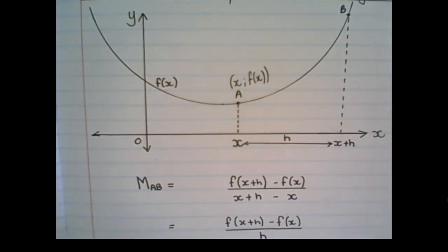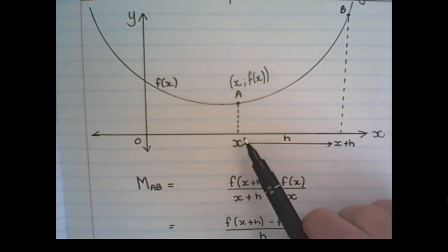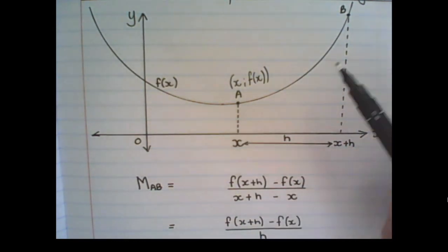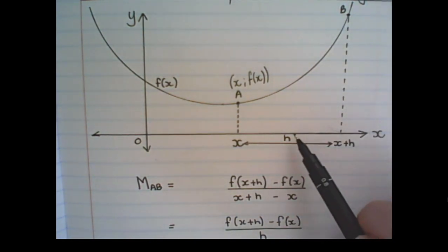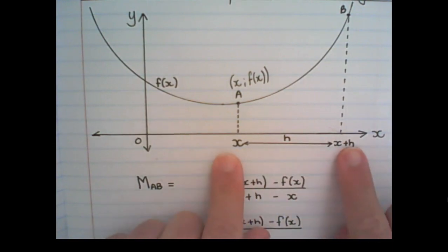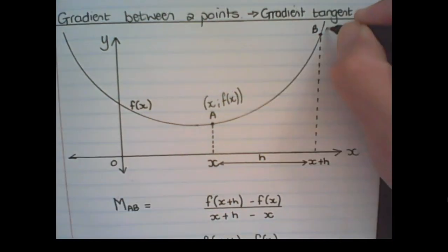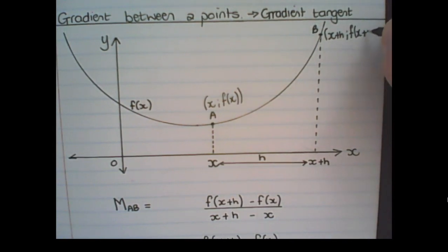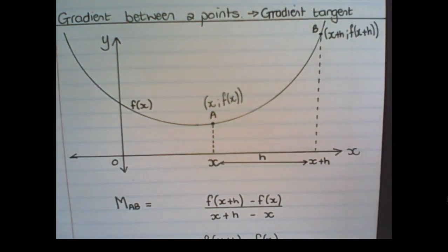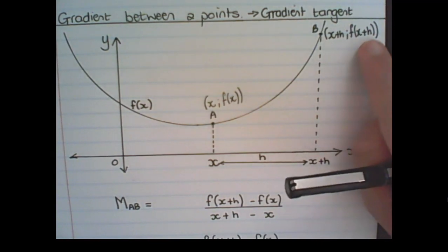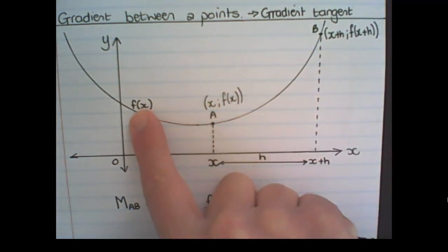Now we're not working with numbers today, we're just working with variables. So the distance between the x value of a and the x value of b is h. So it's h units between these two points. Therefore, the x coordinate of b is x plus h. And then the y value would be f(x+h). So I substitute f(x+h) into the function of the parabola.